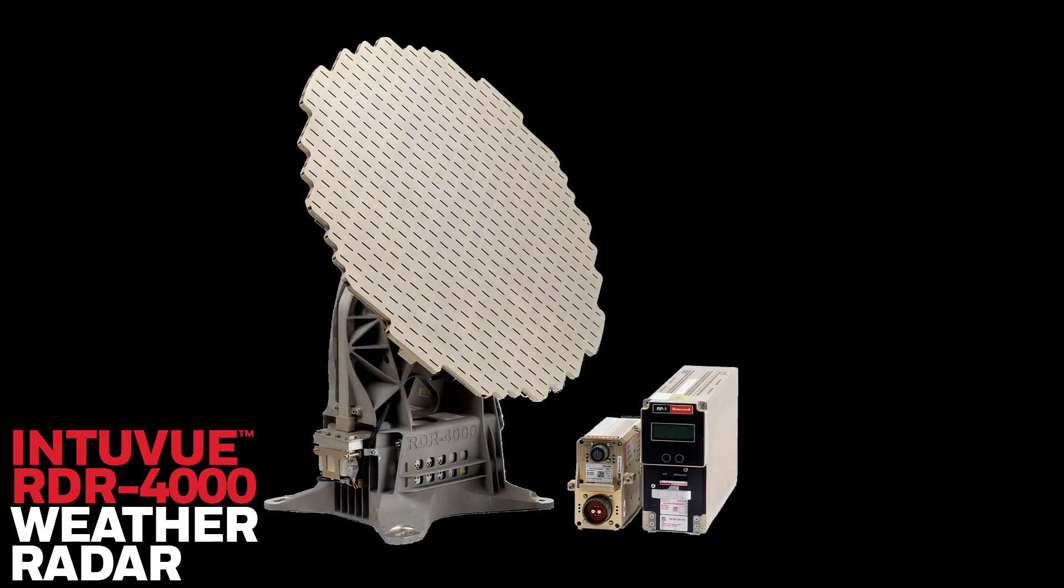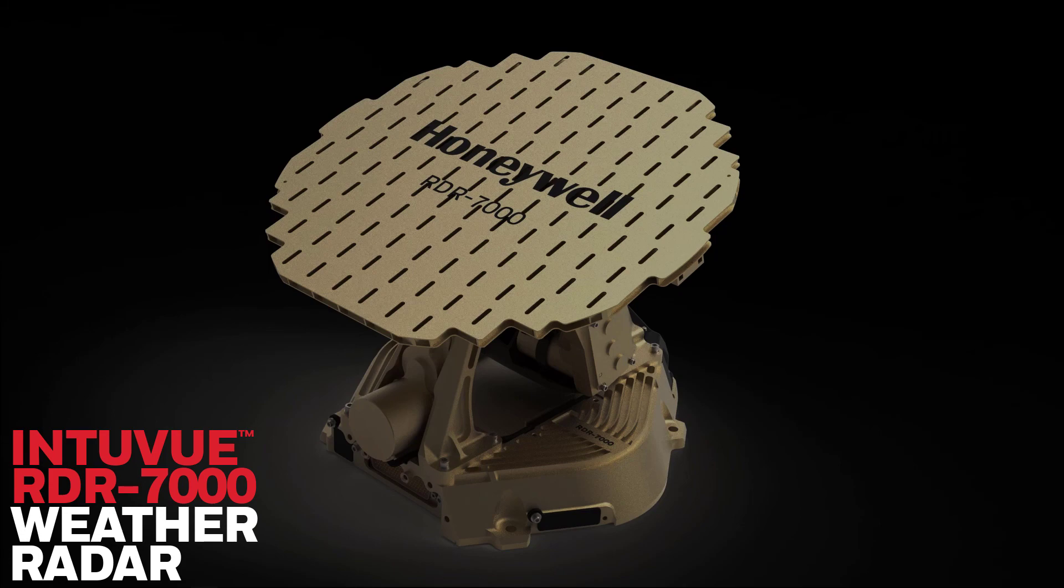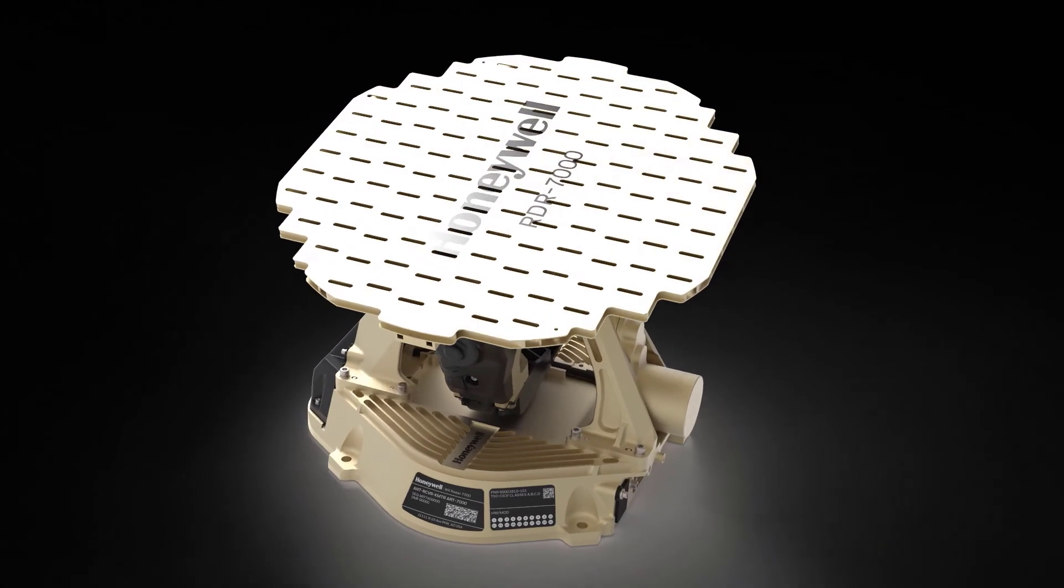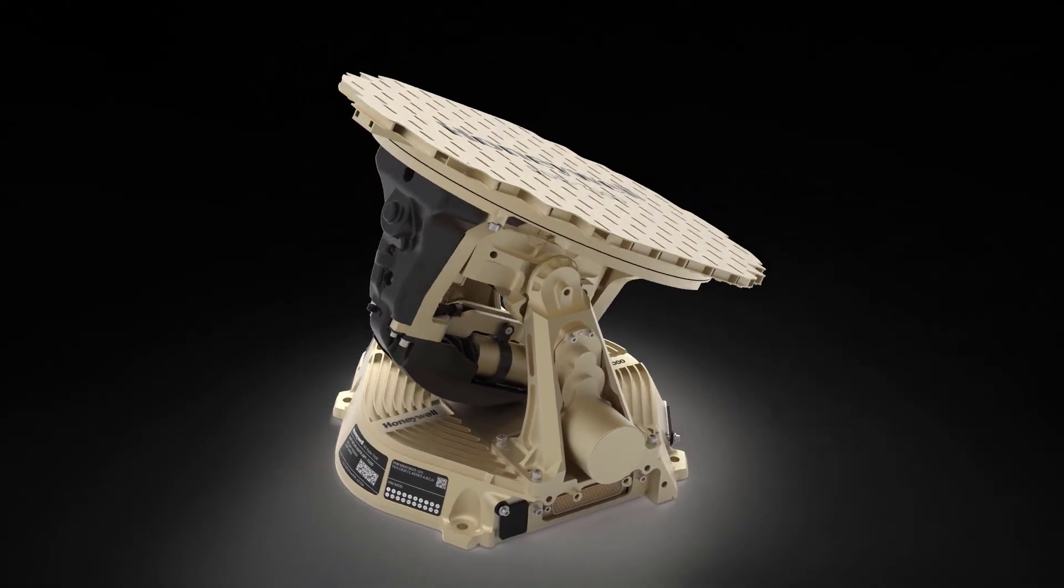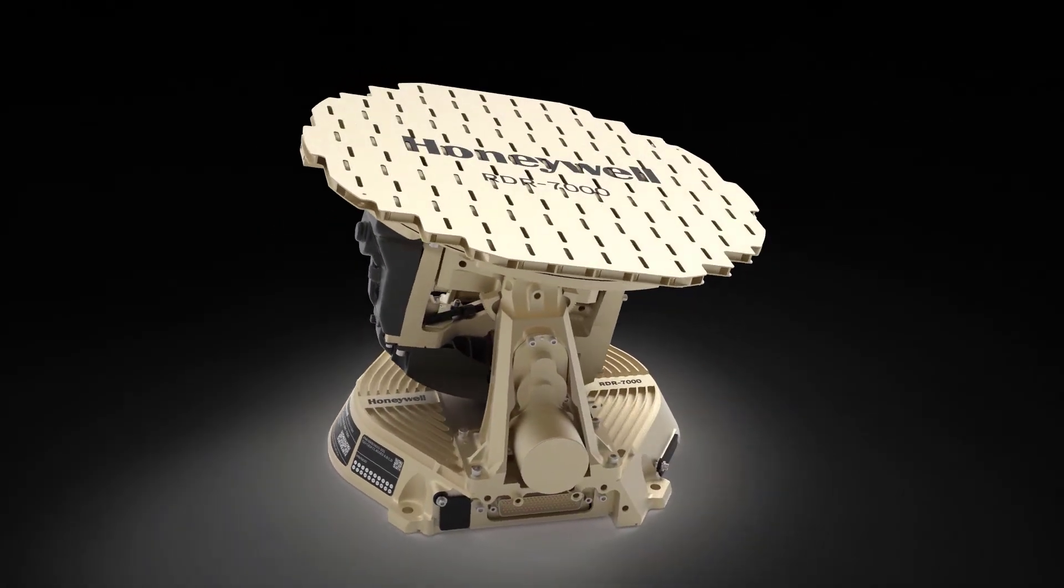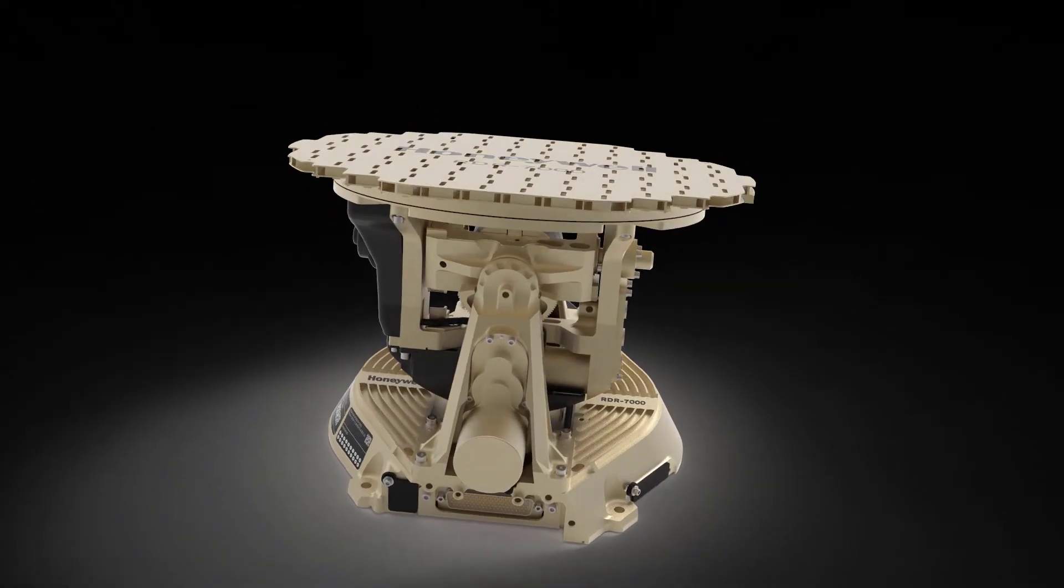All radar systems can detect weather. The RDR 4000 and 7000 don't stop there. They also provide tools allowing you to analyze the weather to determine a safe deviation path for avoidance. In future Honeywell Quick Topic videos, we'll look at uses of the vertical profile mode for weather analysis.